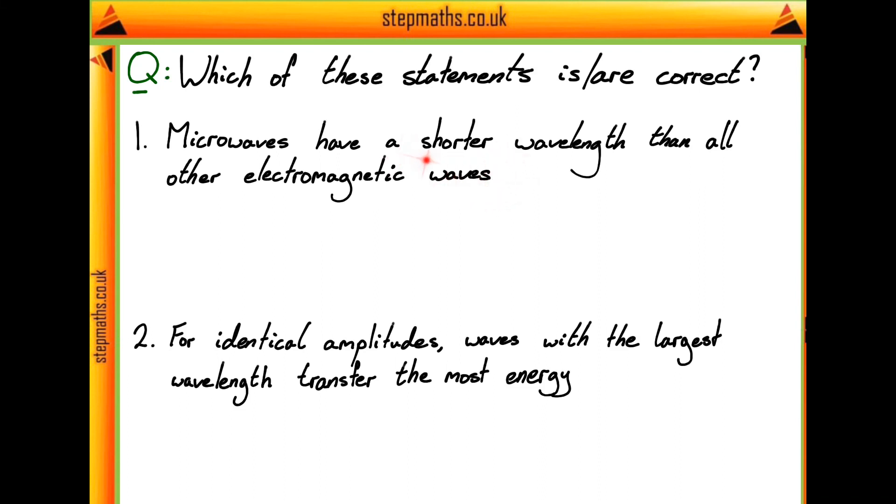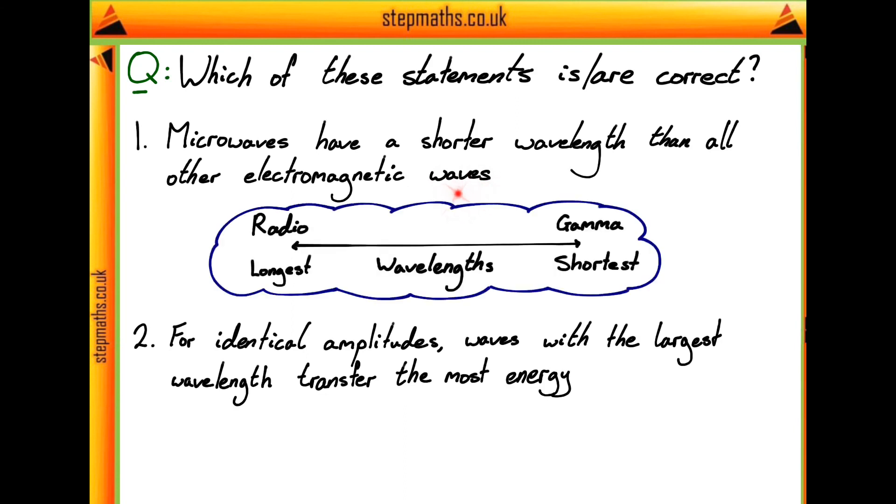So the first statement is that microwaves have a shorter wavelength than all other electromagnetic waves. Well, to try and answer this question we can think about the spectrum of electromagnetic waves that we know. And the spectrum which might come to mind goes from radio all the way up to gamma, with all the other wavelengths being in between these two. So radio have the longest wavelengths and gamma have the shortest.